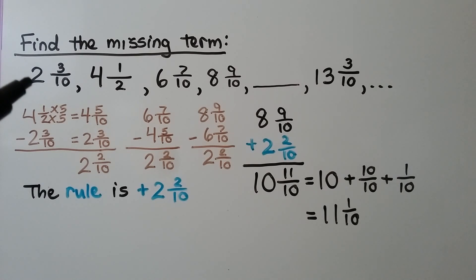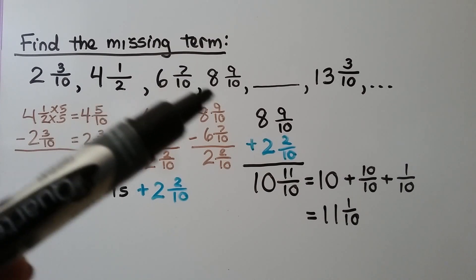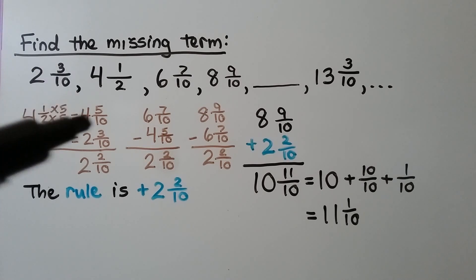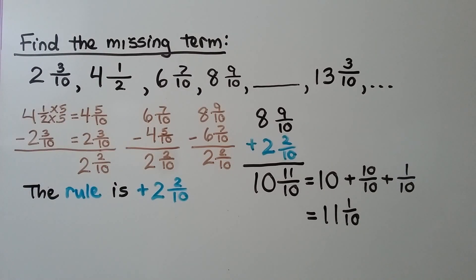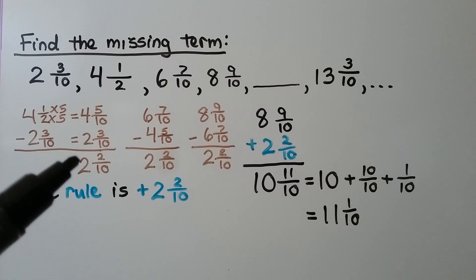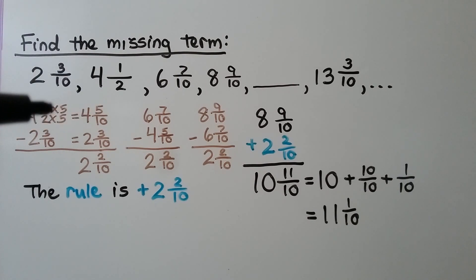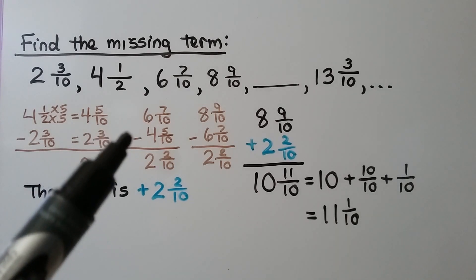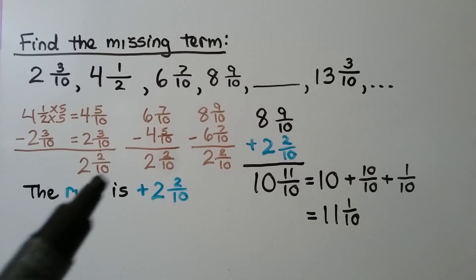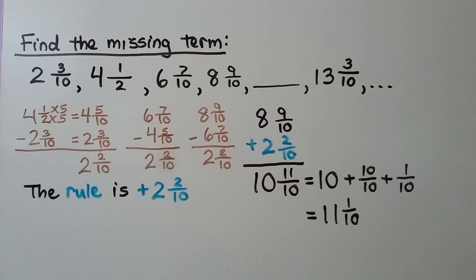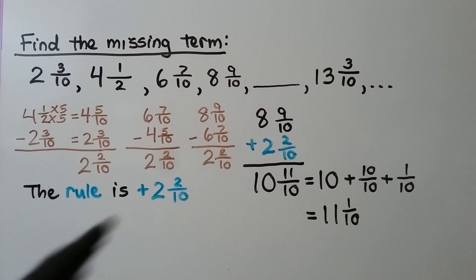Here we need to find the missing term. We have two and three tenths, four and a half, six and seven tenths, eight and nine tenths, then a missing term, and thirteen and three tenths. We start by doing four and a half minus two and three tenths using ten as the common denominator: four and five tenths minus two and three tenths gives two and two tenths. Six and seven tenths minus four and five tenths also gives two and two tenths. Eight and nine tenths minus six and seven tenths gives two and two tenths again — so the rule is add two and two tenths.